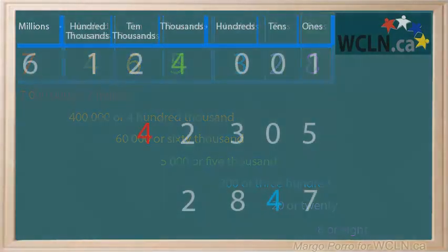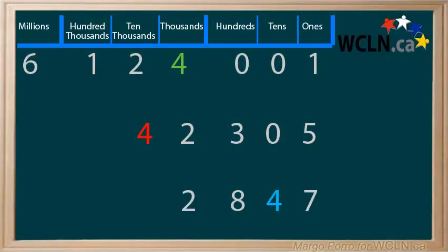Let's look at this a bit differently and see how a single numeral such as 4 can have many different meanings or values. The 4 in the first number, 6,124,001, is in the thousands place. What do you think it is worth? Its worth, or value, is 4,000.